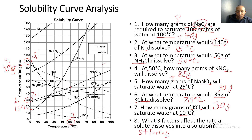Number eight asks: what three factors affect the rate at which a solute dissolves into a solution? The answers are stirring, increasing surface area, and temperature.